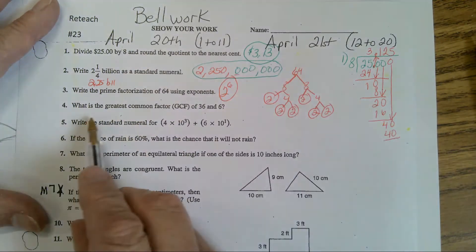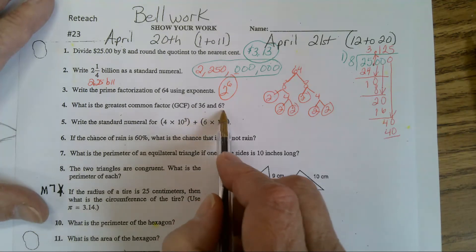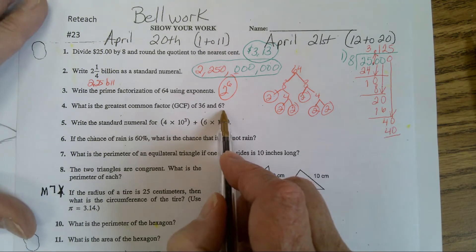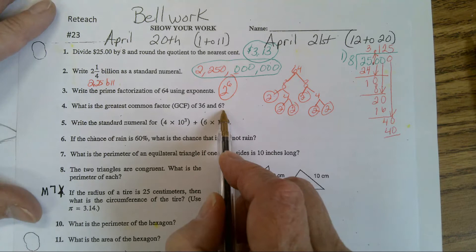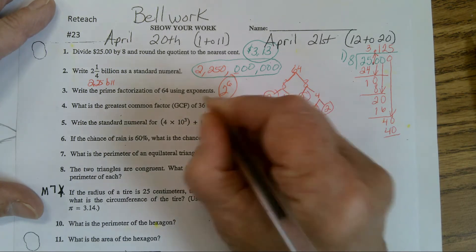What is the greatest common factor of 36 and 6? What's the largest number that can divide them both? 6. 6 will divide 6 and 6 divides 36.